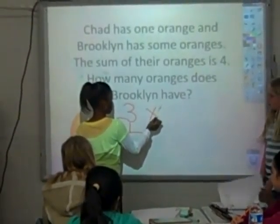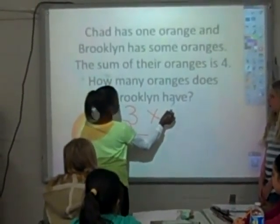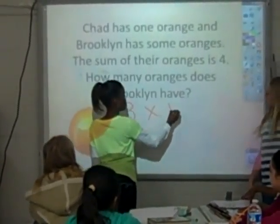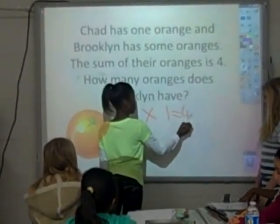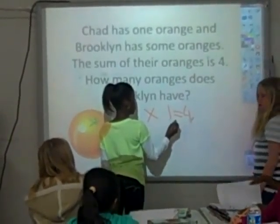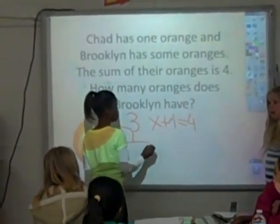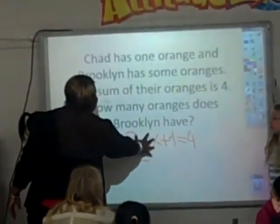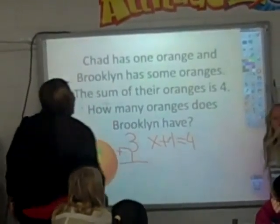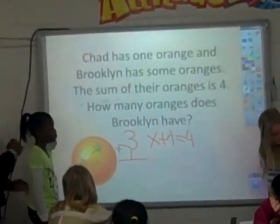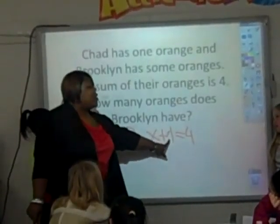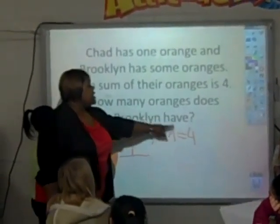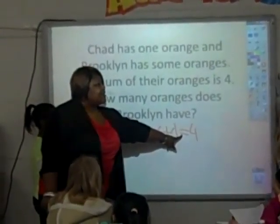So the X is Brooklyn. And what operation? She's right. And what operation? Very good. This tells me that Brooklyn has something, because it didn't say she has zero. I know that she has some, I just don't know how many she has yet. But I do know that Chad has one, and I know that the sum of their oranges is four. So I know that all together they have four.